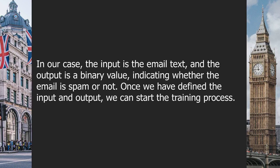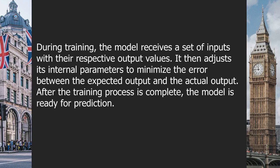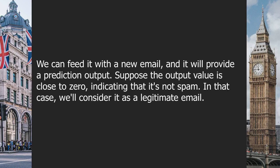Once we have defined the input and output, we can start the training process. During training, the model receives a set of inputs with their respective output values. It then adjusts its internal parameters to minimize the error between the expected output and the actual output. After the training process is complete, the model is ready for prediction. We can feed it with a new email, and it will provide a prediction output. If the output value is close to 0, we consider it a legitimate email; if close to 1, we consider it spam.